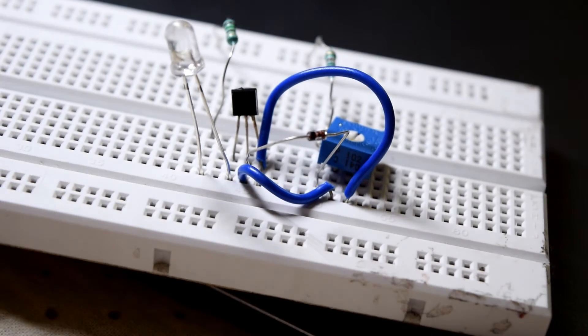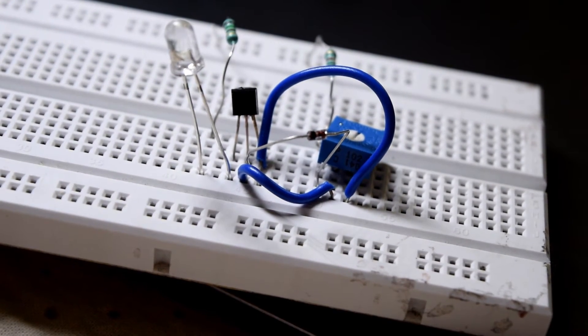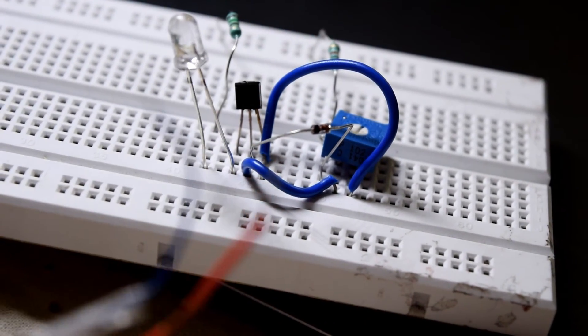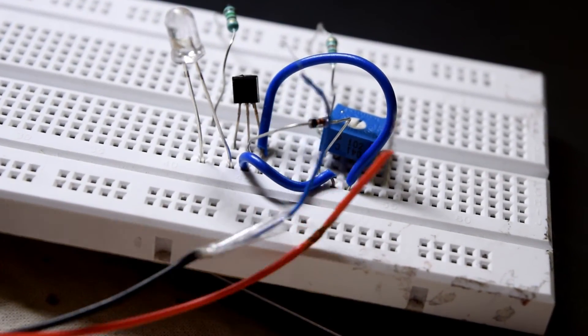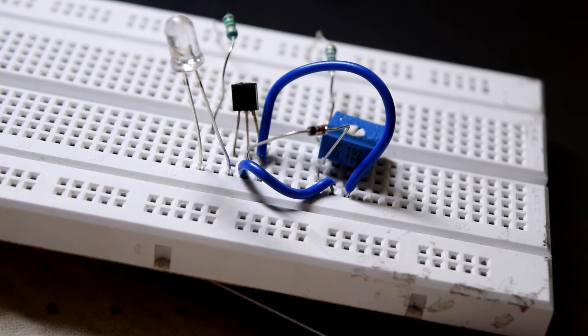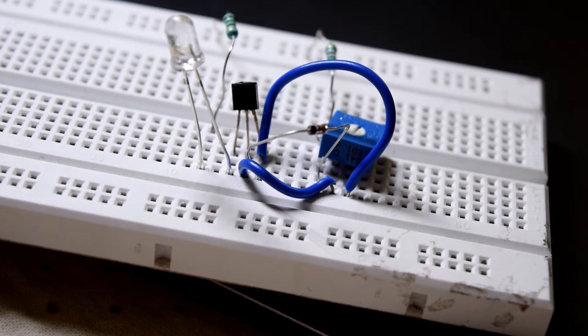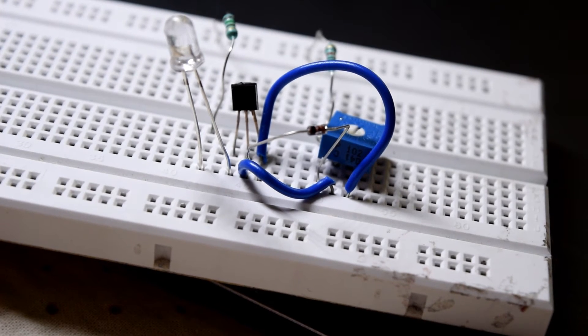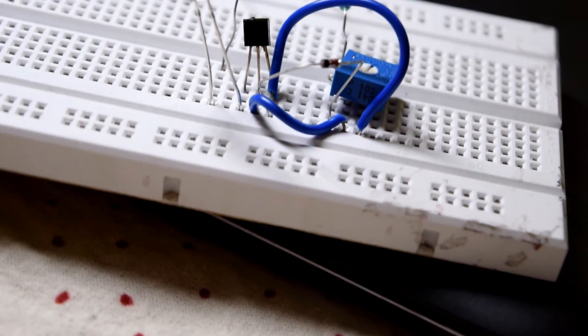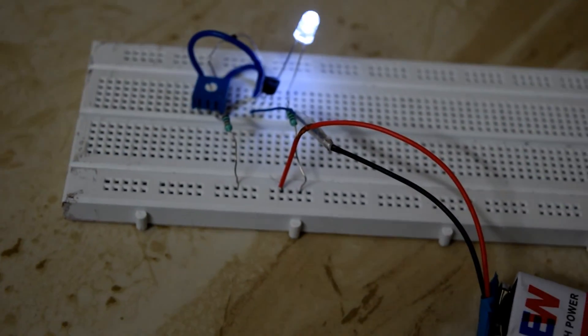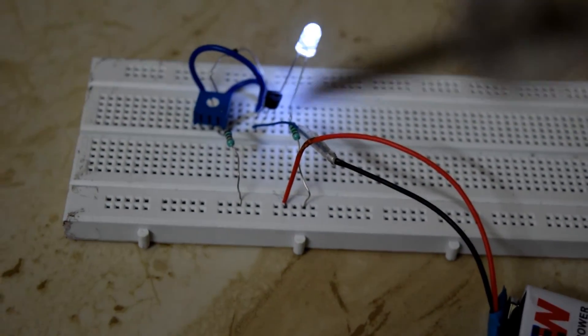Now it's pretty ready. After doing all the connections it should look like this on your breadboard. Now let's give it the power supply. Red wire is the positive terminal and the black is the negative terminal. You have to give the negative power supply to the emitter of the transistor, that is the right pin.